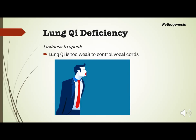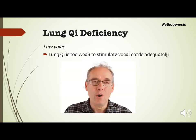Lung chi is also too weak to control the vocal cords, thus people with lung chi deficiency will present with a laziness to speak. Lung chi is also too weak to stimulate the vocal cords adequately, so people with lung chi deficiency will also have a low voice.